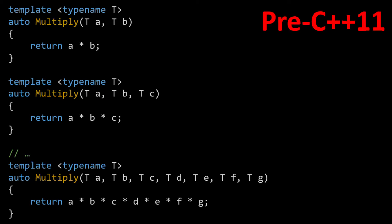Prior to the introduction of variadic templates in C++11, one had to write different versions of a template function for a given amount of parameters. After variadic templates were introduced, that was alleviated. If one wants to use variadic templates for recursion, some extra logic is still required. Let's take a look at recursion with a variable number of arguments in C++11, and then see how Fold Expressions alleviates the need for variadic templates when dealing with recursive functions.